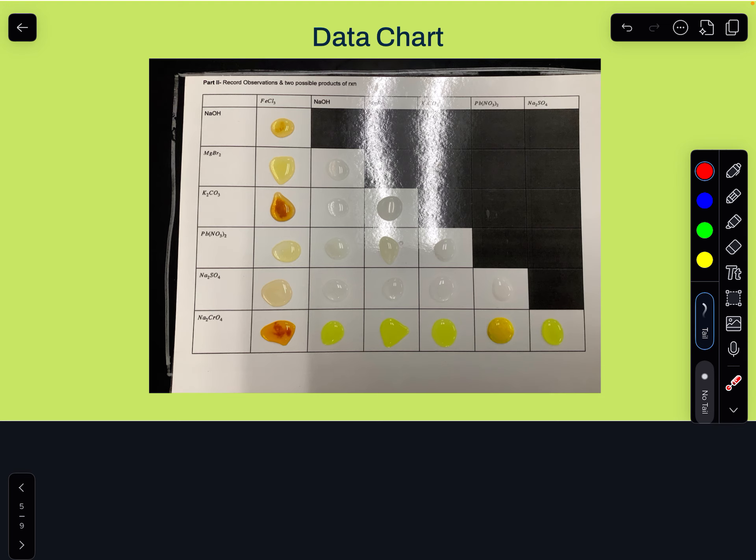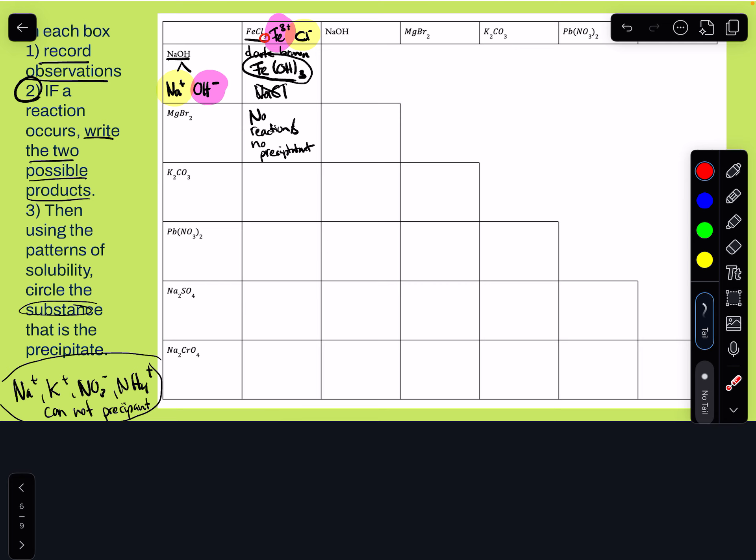Take your observations and then continue to fill in your data chart, once again where you identify the precipitant made and the ones that had a precipitant.